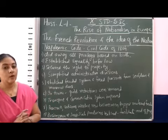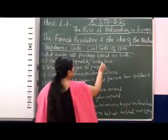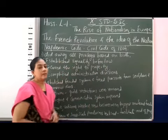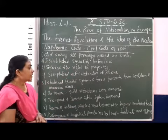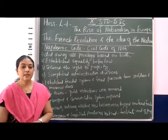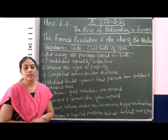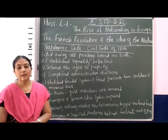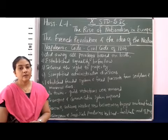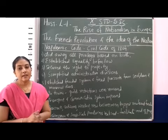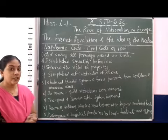The second reform was the establishment of equality before law — Napoleon said that all people in France would be equal and there would be a uniform law for everyone. Third, he secured the right to property. During the time of Louis XVI, ordinary people were not allowed to own property; only the clergy, the nobility, and some of the upper class held land. Napoleon said that everybody can possess and buy property.